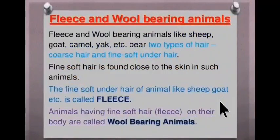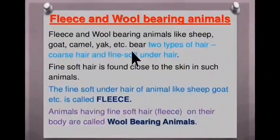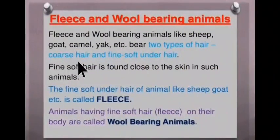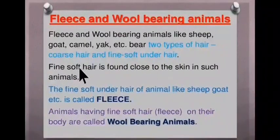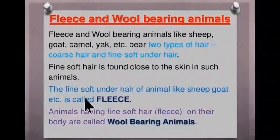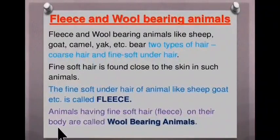Fleece and wool-bearing animals like sheep, goat, camel, yak, etc. bear mainly two types of hair: coarse hair and fine soft under hair. Fine soft hair is found close to the skin in such animals. The fine soft under hair of animals like sheep, goat, etc. is called fleece. Animals having fine soft hair fleece on their body are called wool-bearing animals.